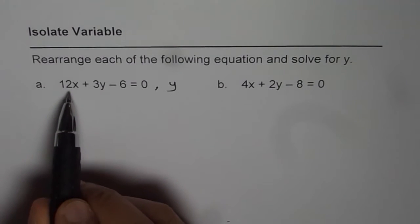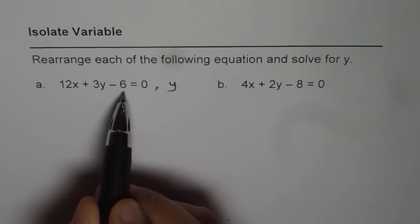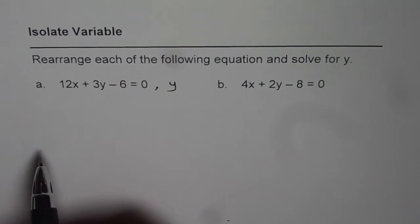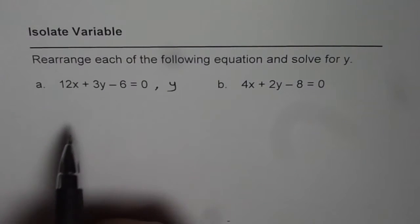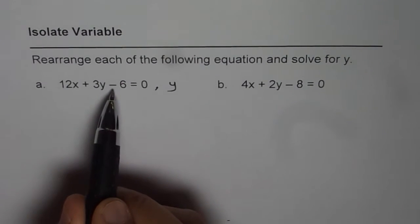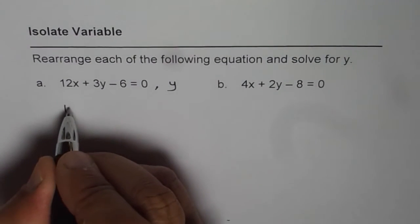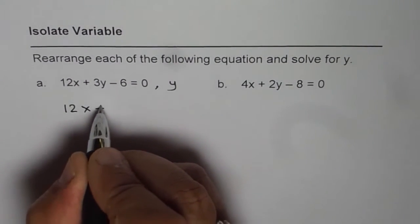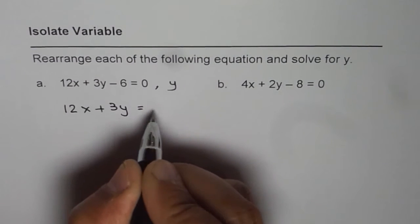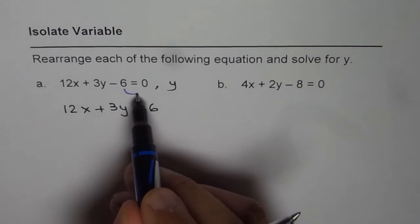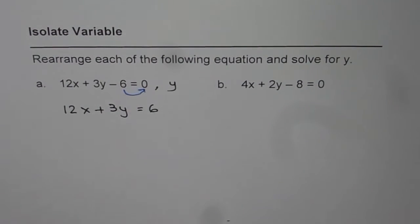So what we do is, we take away the things which are not required on the left side and we do reverse of BEDMAS rules, order of operation that is. Now the first operation should be adding 6 on both sides. When I add 6 on both sides, I get 12x plus 3y equals 6. So in the first step, what we have done is, we have taken 6 to the other side, so it becomes plus 6.